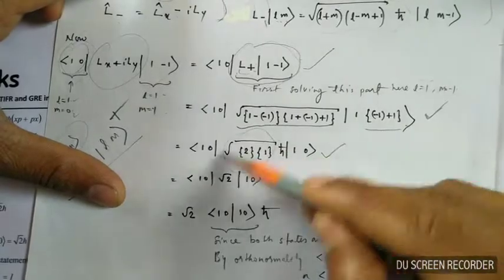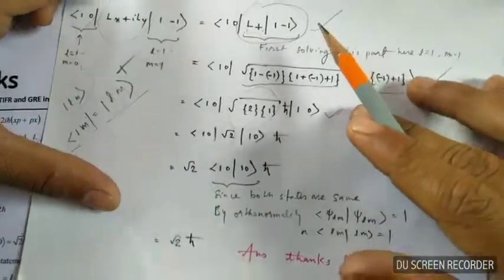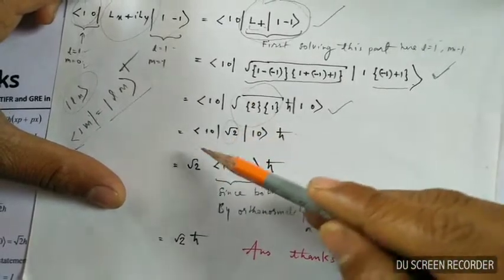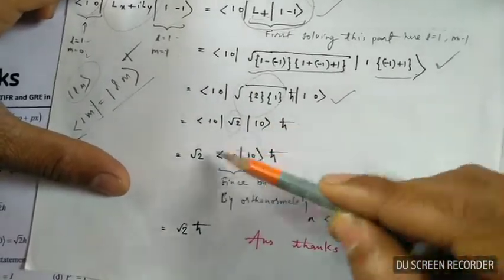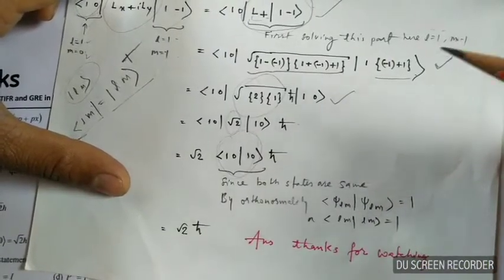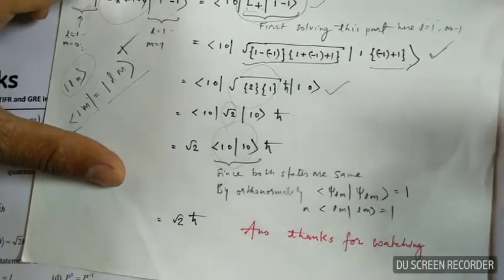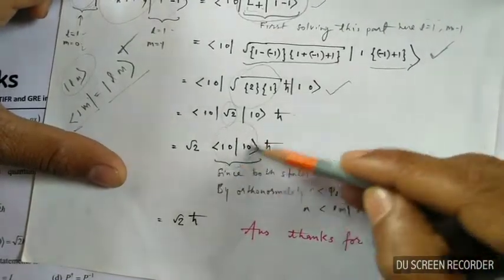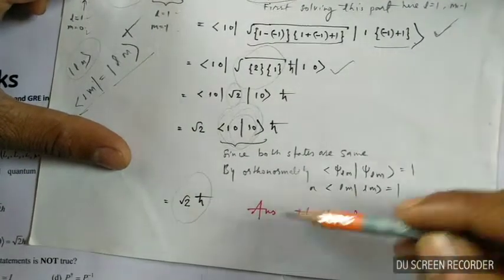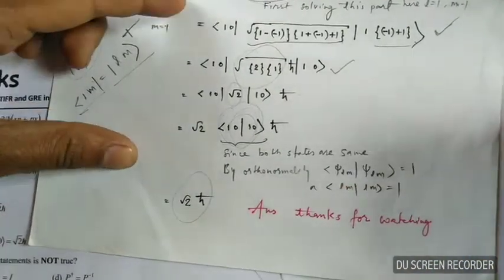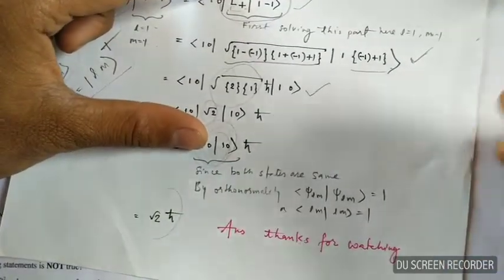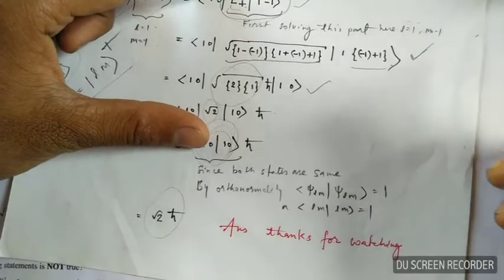After simplification, this part comes to this value. √2 is also a constant and can be taken out. We are left only with the inner product term. Using the orthonormality conditions, this equals 1. So finally our answer is √2 times h₀, which was our expected answer. Thanks for watching — if you like this video, please like, share, and subscribe.